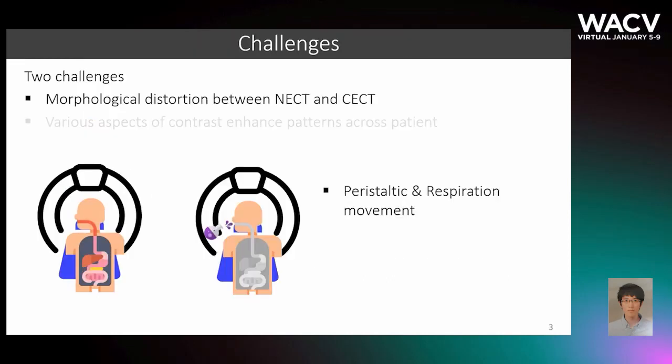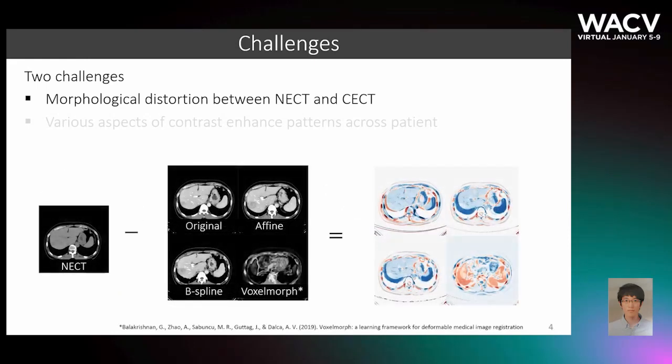There are two challenges to solve this problem. First, NECT and CECT images of the same patient are often largely misaligned due to morphological distortions caused by peristaltic and respiratory movement. Hence, direct supervision for the mapping from NECT to CECT is not accessible. Moreover, due to the large intensity variations and complicated distortions between NECT and CECT, this misalignment issue is not trivially resolved by conventional image registration techniques.